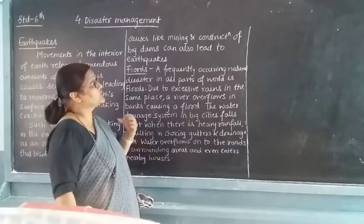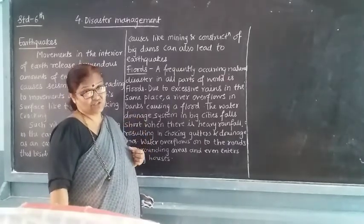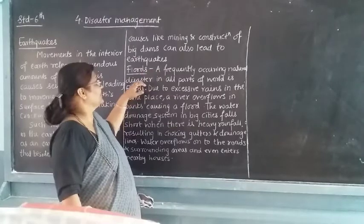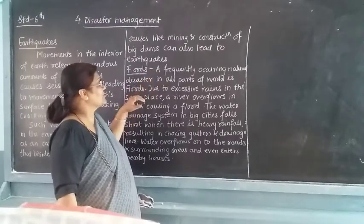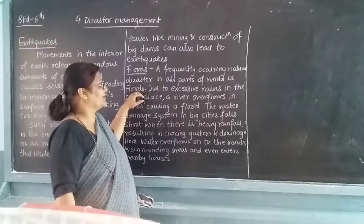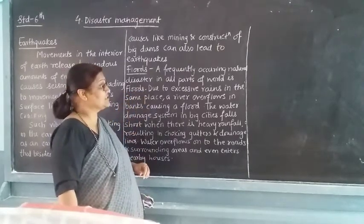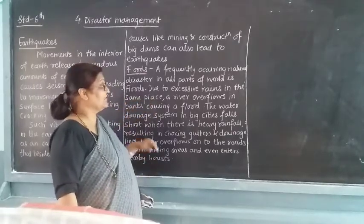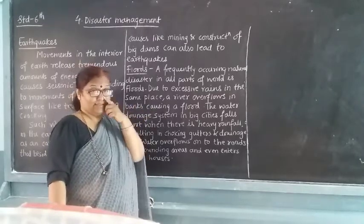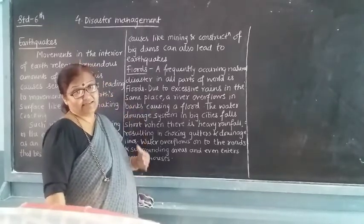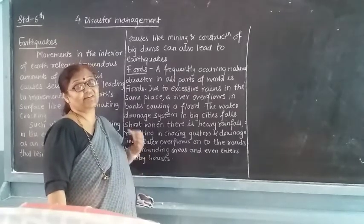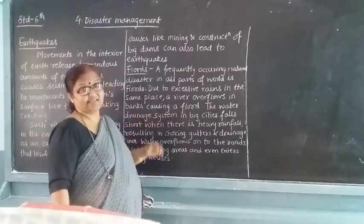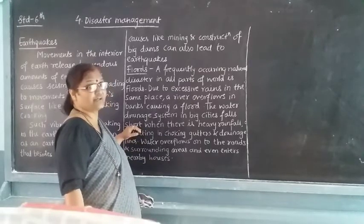Earthquakes can also be caused due to mining or construction of dams. Then comes the flood. A frequently occurring natural disaster in all parts of the world is the flood. Due to excessive rain, whenever there is excessive rain in the same places, or river flows overflow their banks causing a flood. Whenever there is more rain in a particular area, the rivers get flooded.